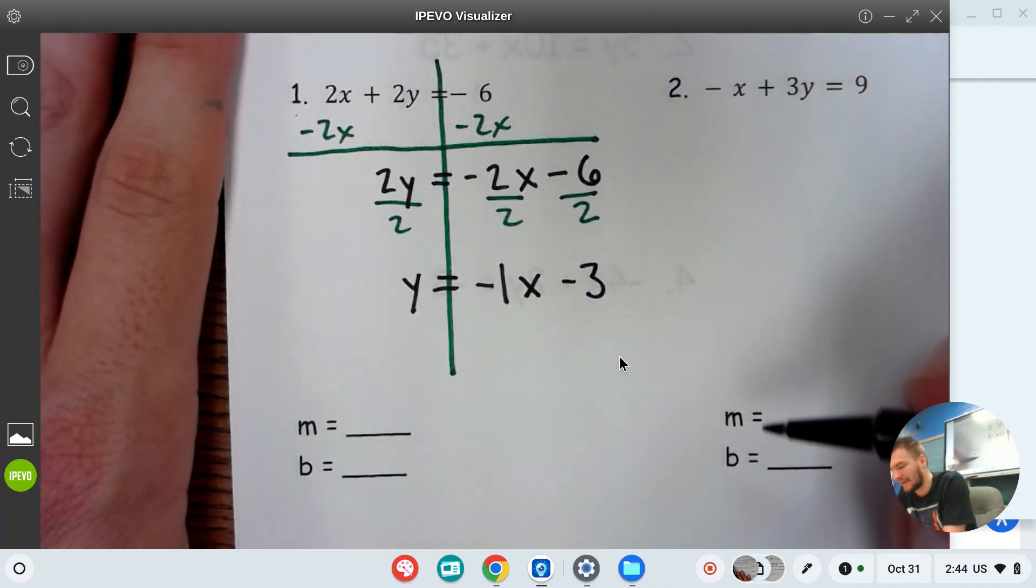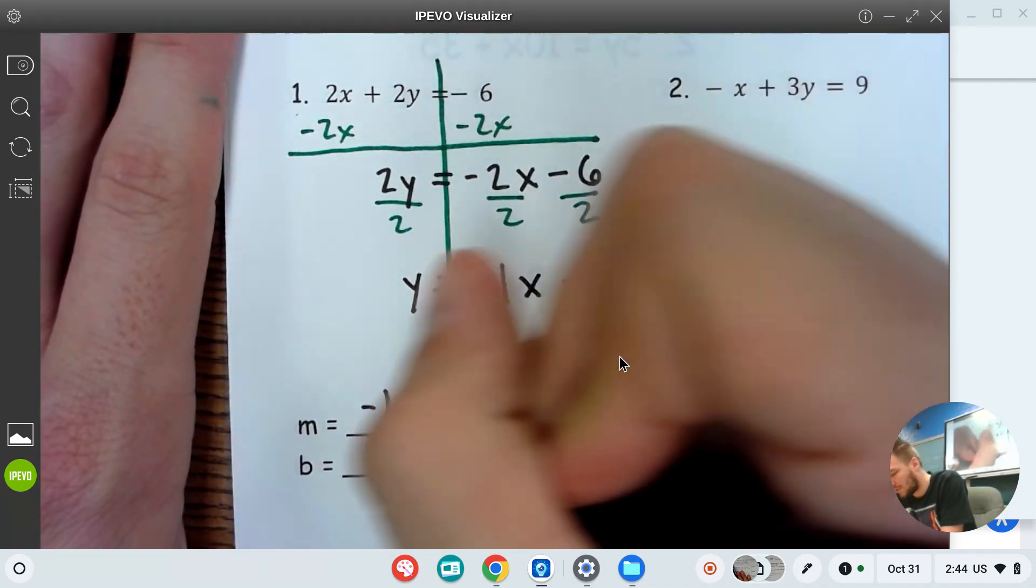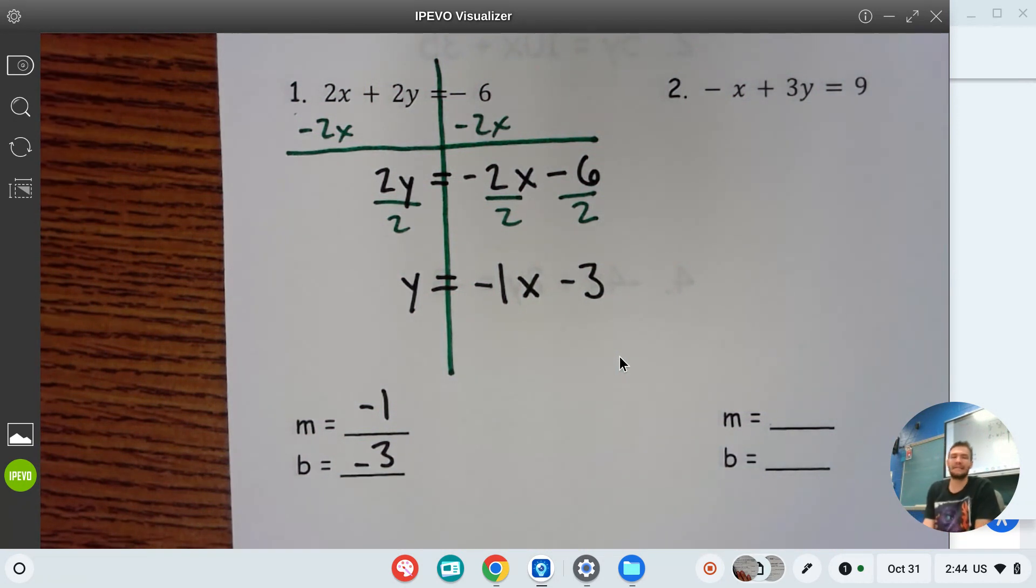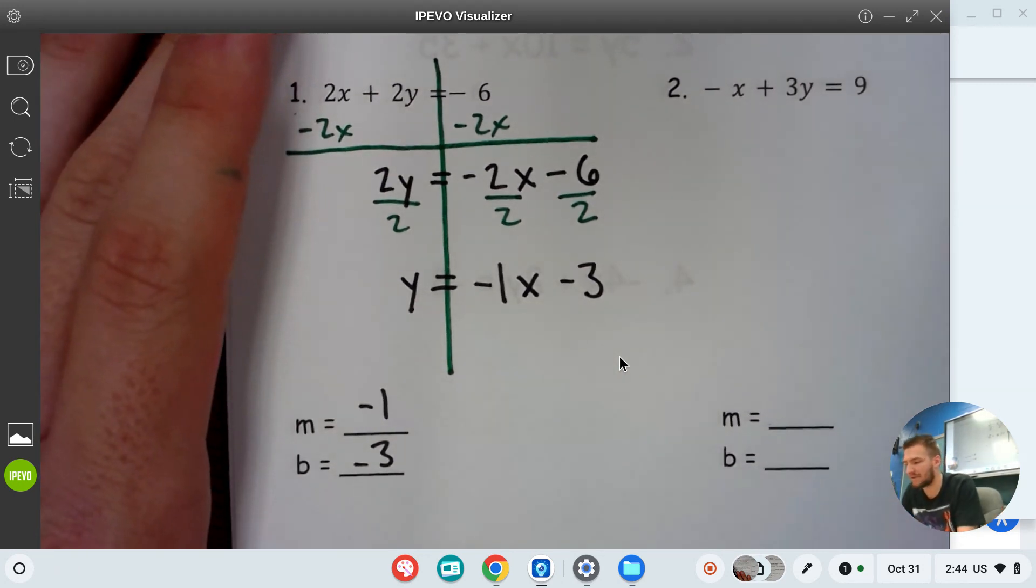Negative three. And so, we should be able to grab the m, grab the b, negative one, negative three. Not too bad. I think example one, pretty easy. Not really stressing example one very much.